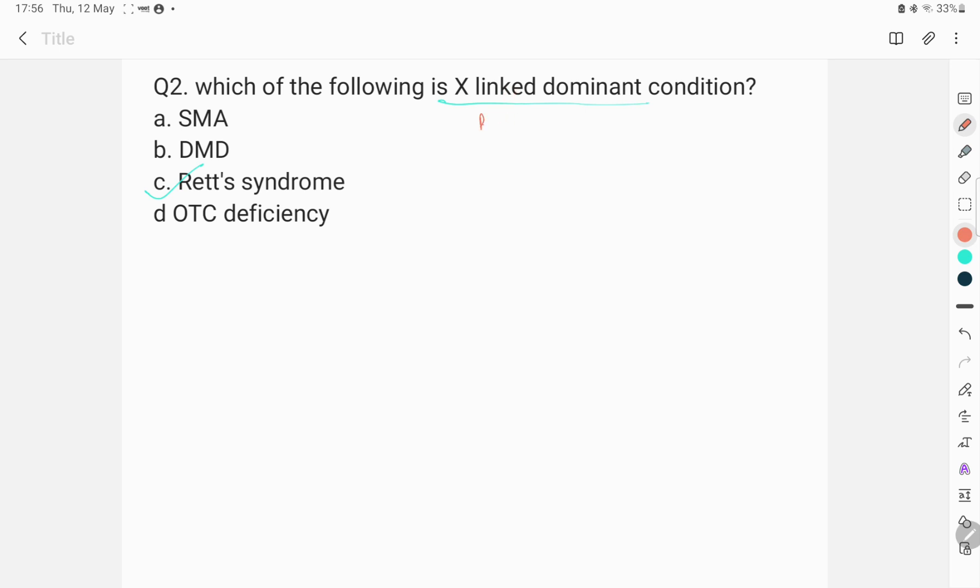Another example apart from Rett syndrome is X-linked hypophosphatemic rickets, Danan's disease and oculogenital digital syndrome and one type of neurocutaneous syndrome, incontinentia pigmenti.